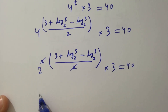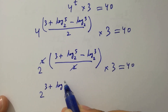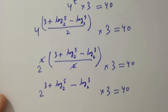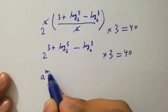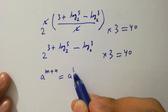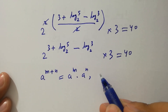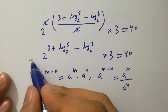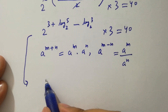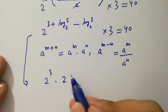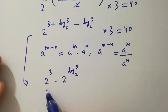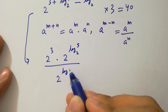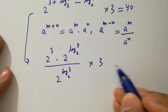We have 2 to the power T plus log 5 to the base 2 minus log 3 to the base 2, times 3 equal to 40. Since a to the power m plus n equals a to the power m times a to the power n, and a to the power m minus n equals a to the power m over a to the power n, it will be 2 to the power 3 times 2 to the power log 5 to the base 2 over 2 to the power log 3 to the base 2, times 3 equal to 40.